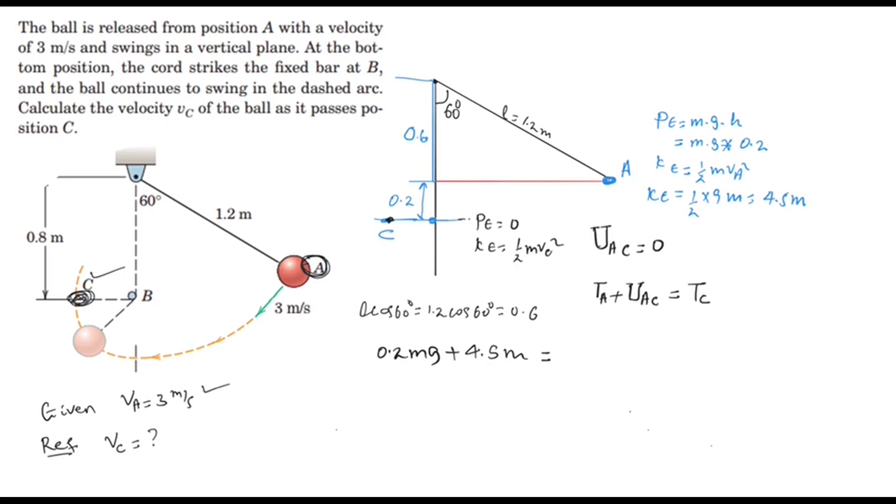The energy at point C is half M vC squared. M is common so it will be cancelled out, and then we'll have vC squared over 2 equals 0.2G plus 4.5.